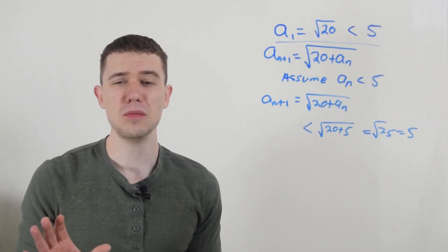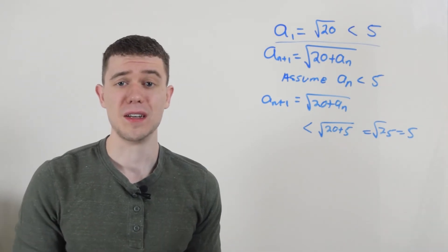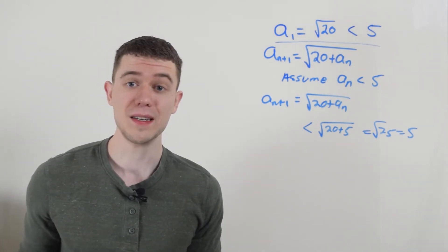But don't worry about the details too much. Basically, all I've done here is shown that for every term in my sequence, it's bounded above by five. So that's one half of the things I have to do. The other thing is to show that my sequence is monotonic.